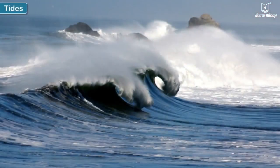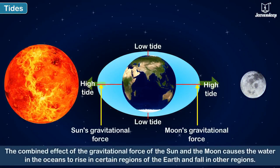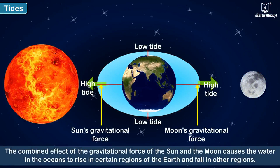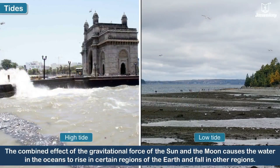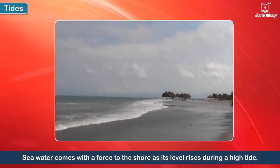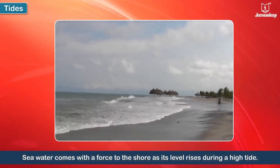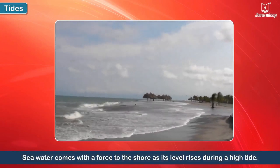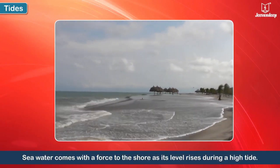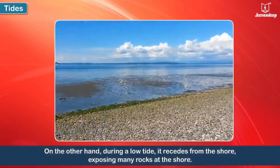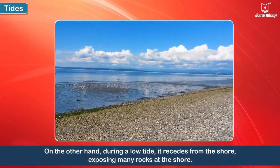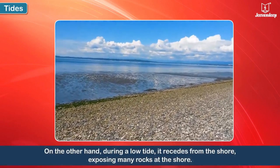Tides. The combined effect of the gravitational force of the Sun and the Moon causes the water in the oceans to rise in certain regions of the Earth and fall in other regions. Sea water comes with a force to the shore as its level rises during a high tide. During a low tide, it recedes from the shore, exposing many rocks at the shore.